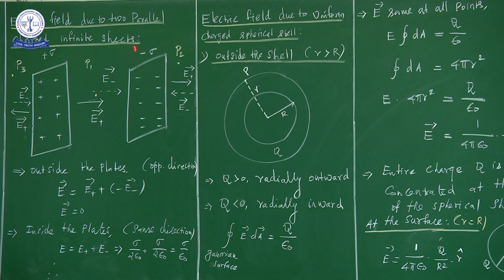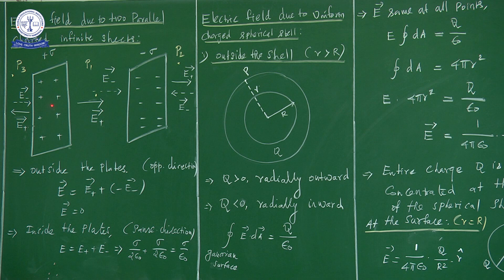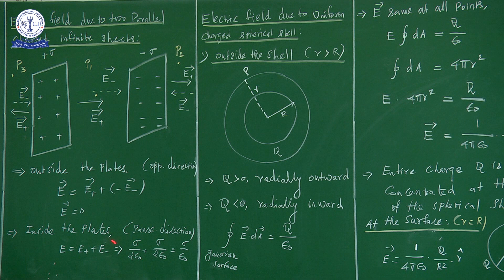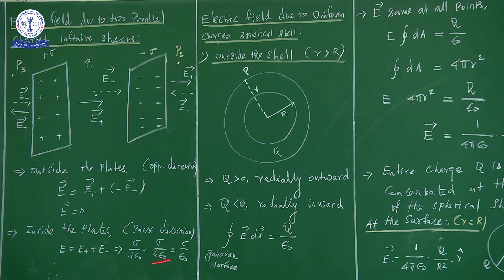Next, we calculate the inside field. Inside, the total electric field E equals E plus plus E minus. The E plus vector is produced by the plus charge Q, and the E minus vector is produced by the minus charge. The two fields are in the same direction inside. The magnitude value of E plus is sigma by 2 epsilon, and E minus is also sigma by 2 epsilon. Adding these two gives sigma by epsilon. So inside the plate, the electric field is sigma by epsilon.